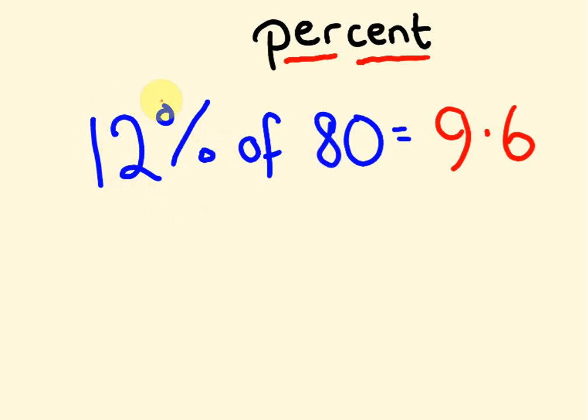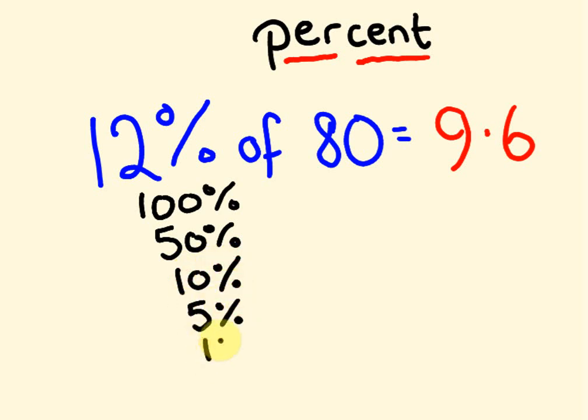So percent, we're talking about a number out of 100. This 12 is literally 12 out of 100. We're going to be looking at 100%, 50%, 10%, 5%, and 1% of a number. If you can start to automatically work these out, you can work out percentages that are more complex.